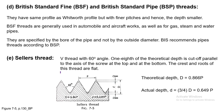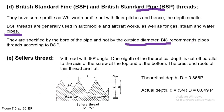British Standard Fine (BSF) or British Standard Pipe (BSP) threads have the same profile as the Whitworth profile but with finer pitches and hence smaller depth. BSF threads are generally used in automobile and aircraft work, as well as gas, steam, and water pipes. They are specified by the bore of the pipe, not the outside diameter. BIS recommends pipe threads according to BSP.